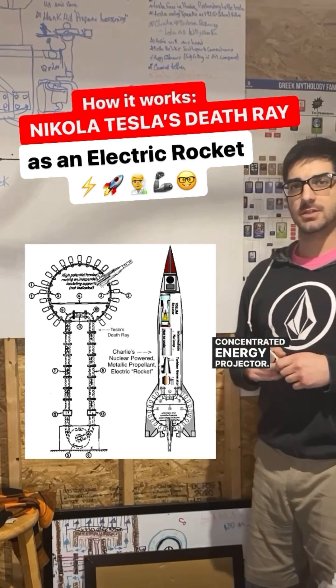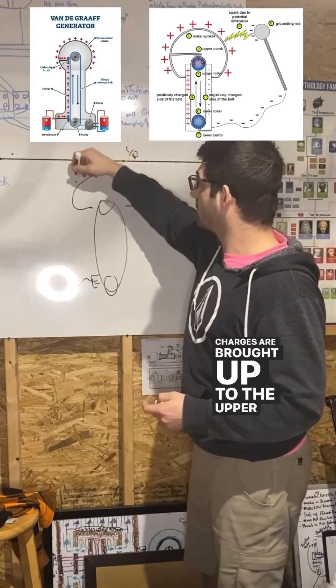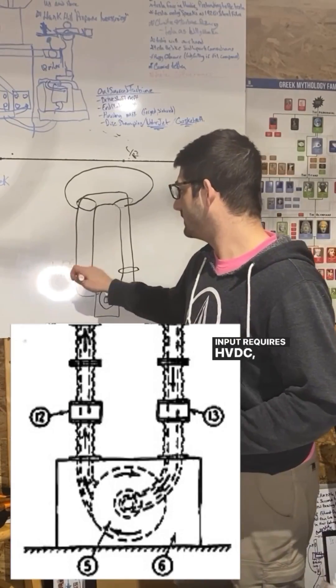Nikola Tesla's non-dispersive concentrated energy projector, which a lot of people know as his death ray. Most people know of the van de graaf generator where charges are brought up to the upper terminal. The input requires HVDC.